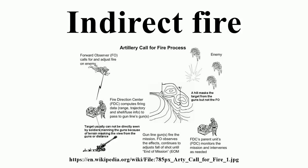Indirect fire is aiming and firing a projectile without relying on a direct line of sight between the gun and its target, as in the case of direct fire. Aiming is performed by calculating azimuth and elevation angles, and may include correcting aim by observing the fall of shot and calculating new angles.